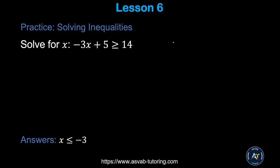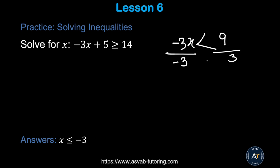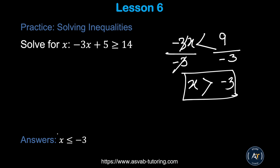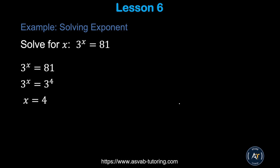There is one important rule for inequalities: if you have something like −3x < 9 and you divide both sides by a negative number, the inequality sign flips. Dividing both sides by −3 gives x > −3. Apply this rule to solve the practice inequality and you will get the correct answer.